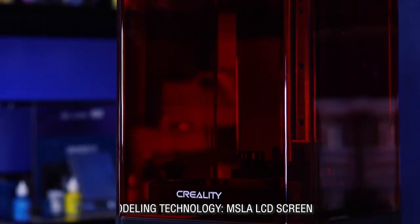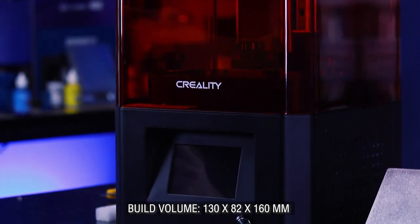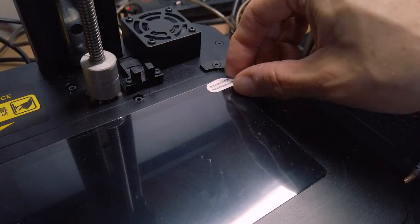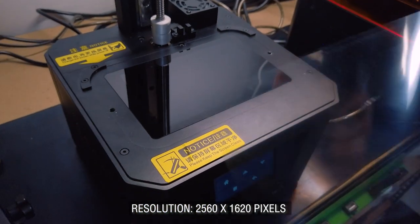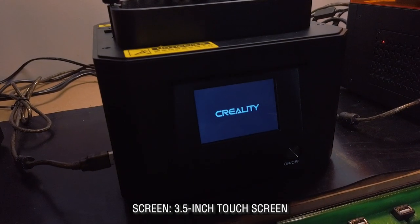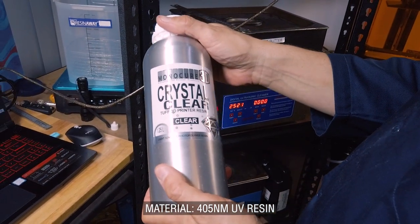So let me run through the specifications. It is an MSLA LCD. The build volume is 130 by 82 by 160. It does layer heights between 30 and 50 microns. The resolution is 2560 by 1620 pixels. 3.5 inch touchscreen. It will print any 405 UV resin including of course the Monocure 3D resin.